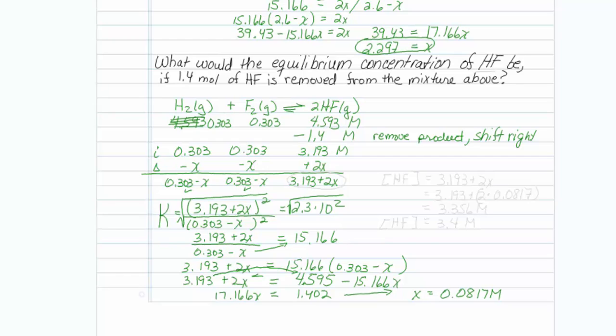Now to get around to answering the actual question. It's actually asking me, what would the equilibrium concentration of HF be? Well, how did I represent that concentration? I represented it as 3.193 plus 2x. So that would be 3.193 plus 2 times the 0.0817 that I solved for, which in the end turns out to be 3.356 molar, or paying attention to sig figs, it looks like it will be 3 point, oh that rounds up, 4 molar. Well, that was an incredibly long problem.